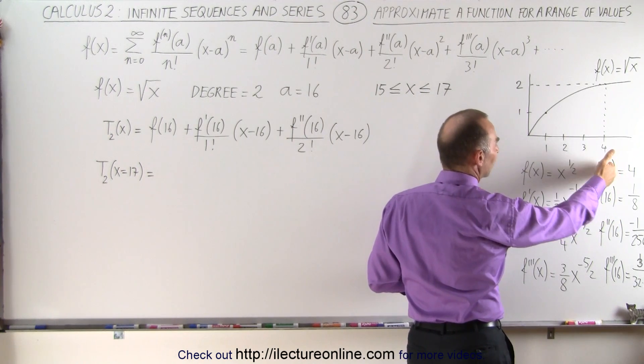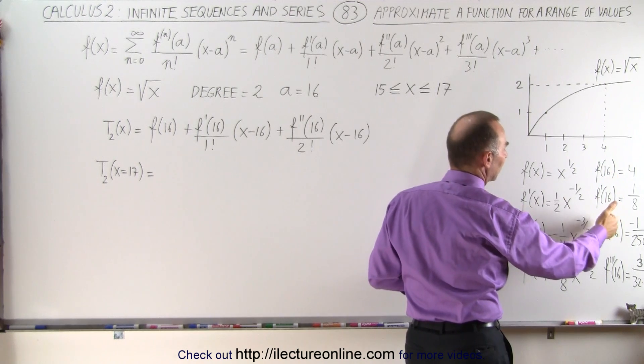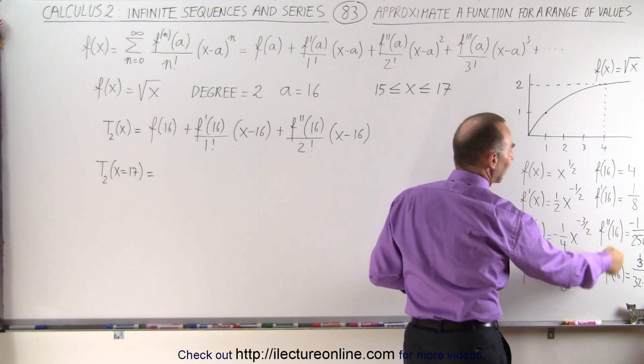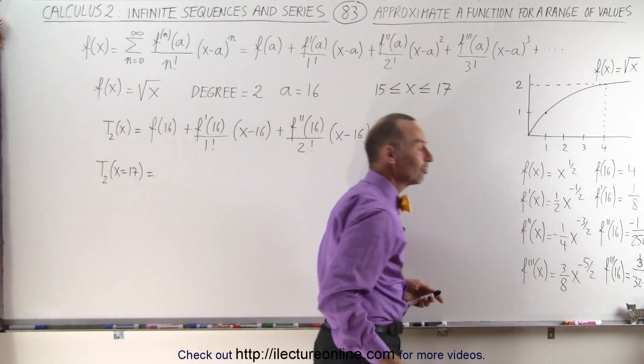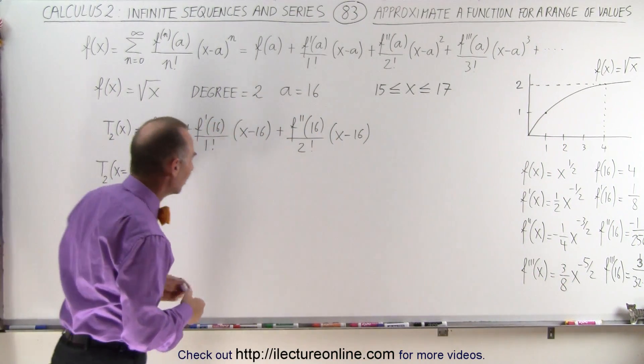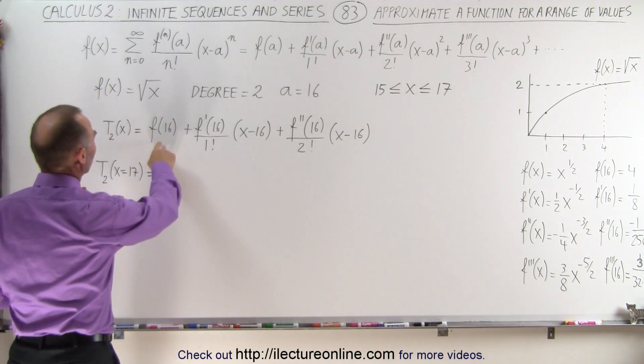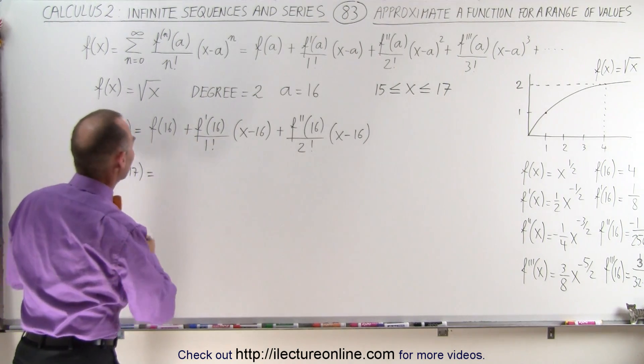And then we evaluated the function, the first derivative, the second derivative, and the third derivative for the value at a equals 16 to get these coefficients here. Makes it easier to come up with the Taylor series expansion. So the function evaluated at 16 is equal to 4.